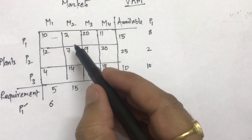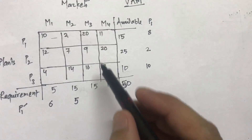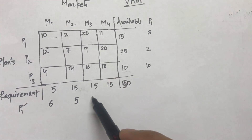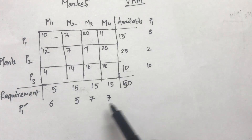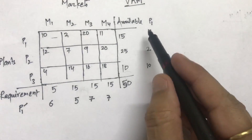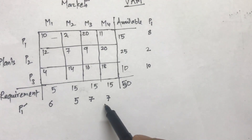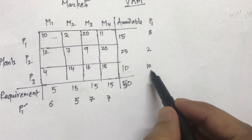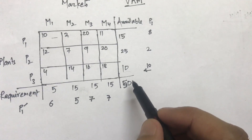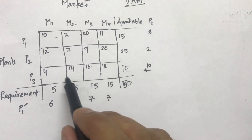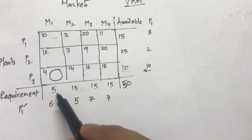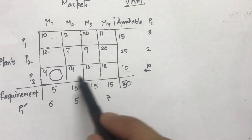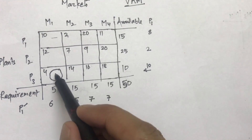For the column penalties: column one is 10 minus 4 giving 6; column two is 7 minus 2 giving 5; column three is 9 minus 16... wait, that gives 7; and column four is 18 minus 11 giving 7. Once all penalties are calculated, I find the maximum among all row and column penalties. The maximum is 10, which is the decider. In that row I find the minimum cost cell, which is 4. I allocate the minimum of supply and demand — between 10 and 5 — so I allocate 5 units.